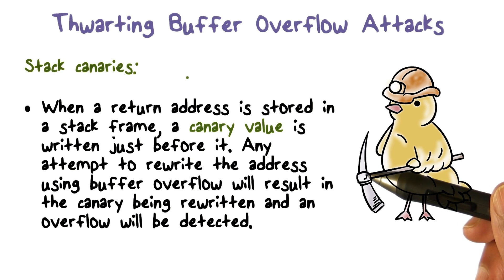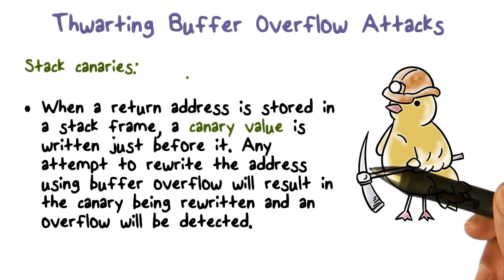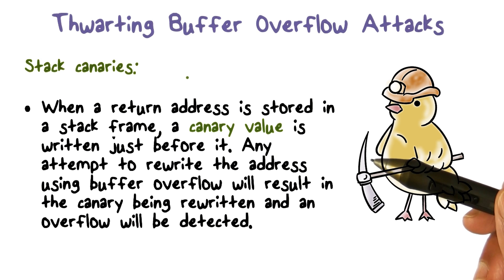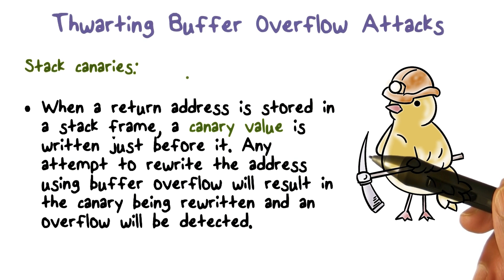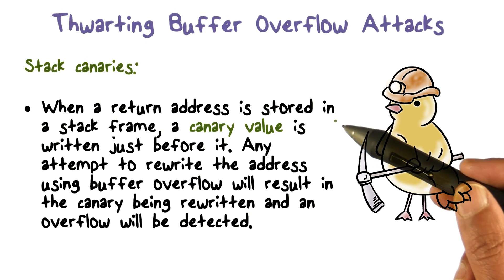So how can you detect if the return address has been modified? And if it's been modified, you know there is an overflow. And if you can automatically detect that, then you can stop things right there — the program can terminate or something like that.